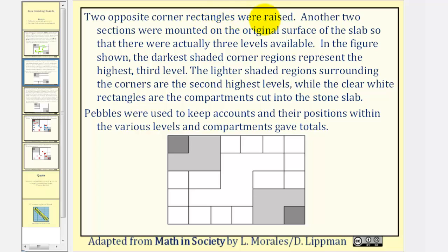Two opposite corner rectangles were raised, which would be this rectangle and this rectangle. Another two sections were mounted on the original surface of the slab so that there were actually three levels available. In the figure shown below, the darkest shaded corner regions represented the highest third level, which would be this square and this square. The lighter shaded regions surrounding the corners are the second highest levels, while the clear white rectangles and squares are the compartments cut into the stone slab. Pebbles were used to keep accounts and their positions within the various levels and compartments gave totals.